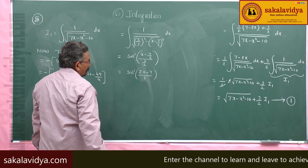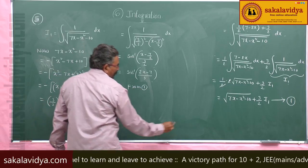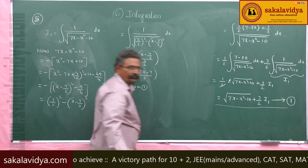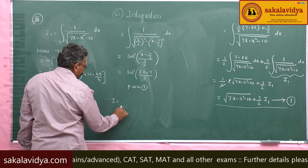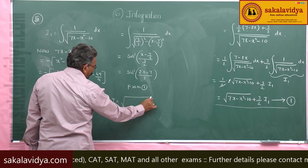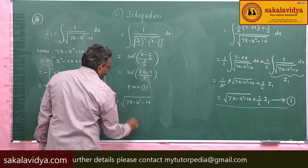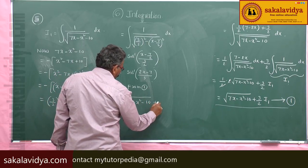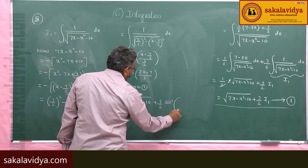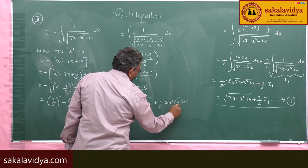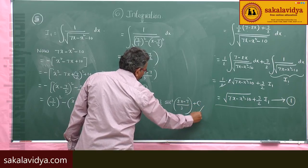Therefore, the required integral I is equal to root of (7x minus x squared minus 10) plus (3 by 2) sin inverse of (2x minus 7) by 3, plus constant of integration.